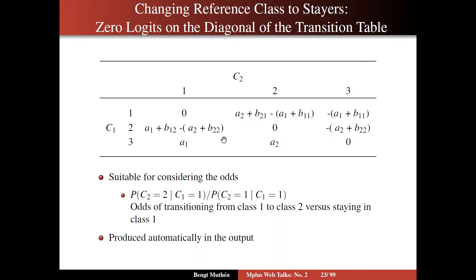To get the diagonal to be zero, you subtract the term from the previous page — namely A1 plus B11, so that becomes zero — and then you subtract A1 plus B11 from both of the other columns. Same thing for row two: subtract A2 plus B22, and so on. This is suitable for considering the odds of transitioning from class one to class two versus staying in class one — the stayer. So that may be of more interest in the reading data example.